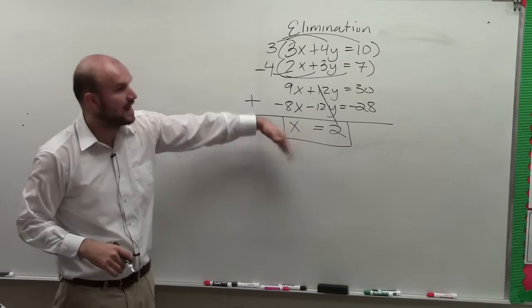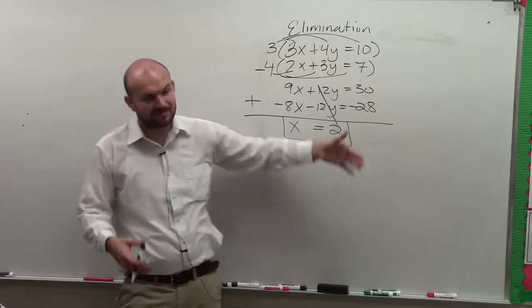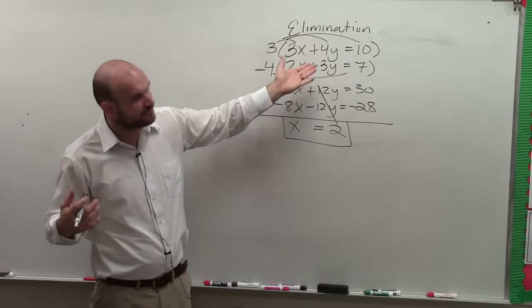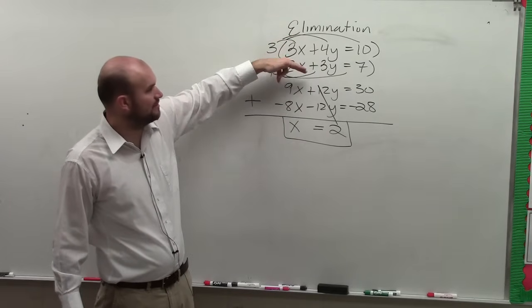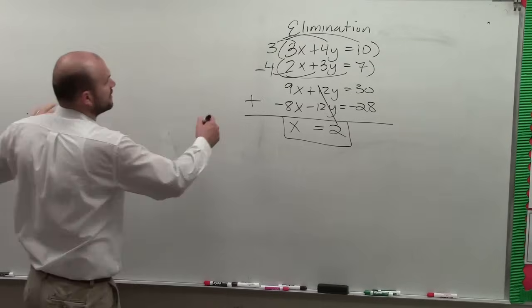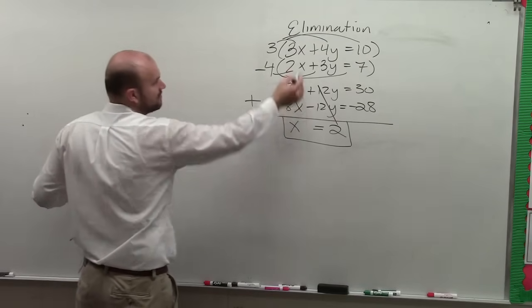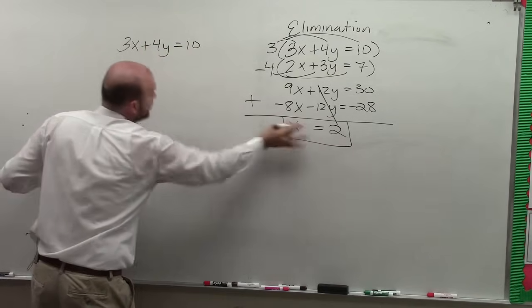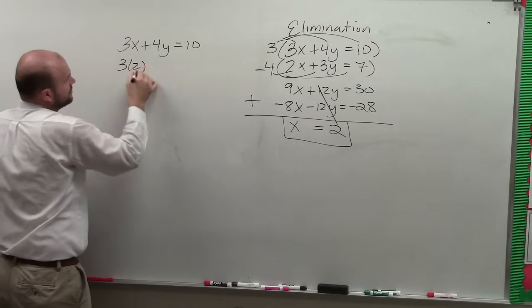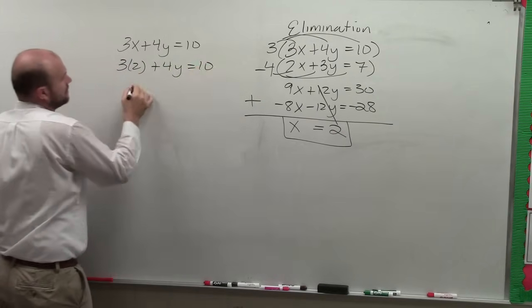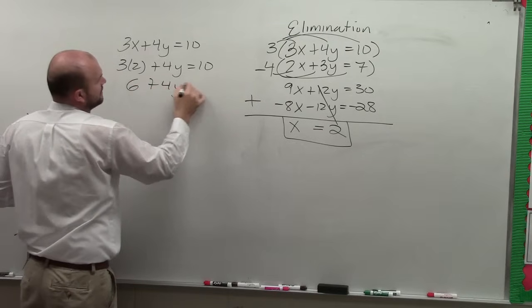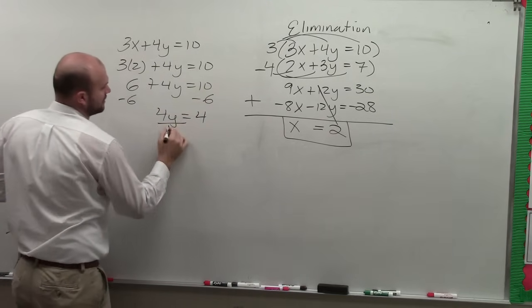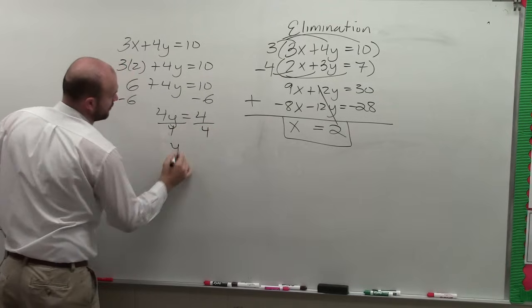OK, now we know what x is, now we need to figure out what y is. But the problem, you remember in substitution how nice it was to have y solved to plug the other one in? Here we don't have one solved, so we just have to pick an equation. So Jeremy, which equation, the top one or the bottom one? Top one, it doesn't matter, pick whatever one. And you could use that one or you could use that one, but obviously these are smaller numbers. So I'm going to say 3x plus 4y equals 10. So again I know what x is. 3 times 2 plus 4y equals 10. 6 plus 4y equals 10. Subtract 6, subtract 6. 4y equals 4. Divide by 4, divide by 4. Y equals 1.